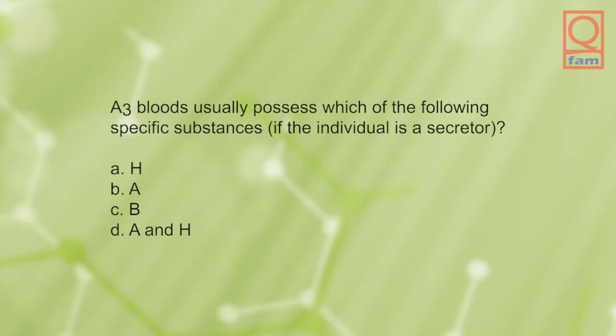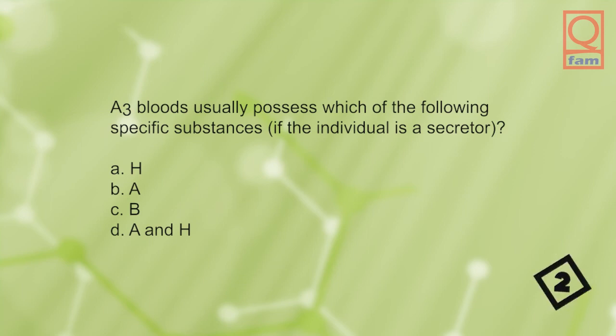AB blood group individuals usually possess which of the following specific substances if the individual is a secretor? A) H, B) A, C) B, D) A and H. The answer is D, A and H.